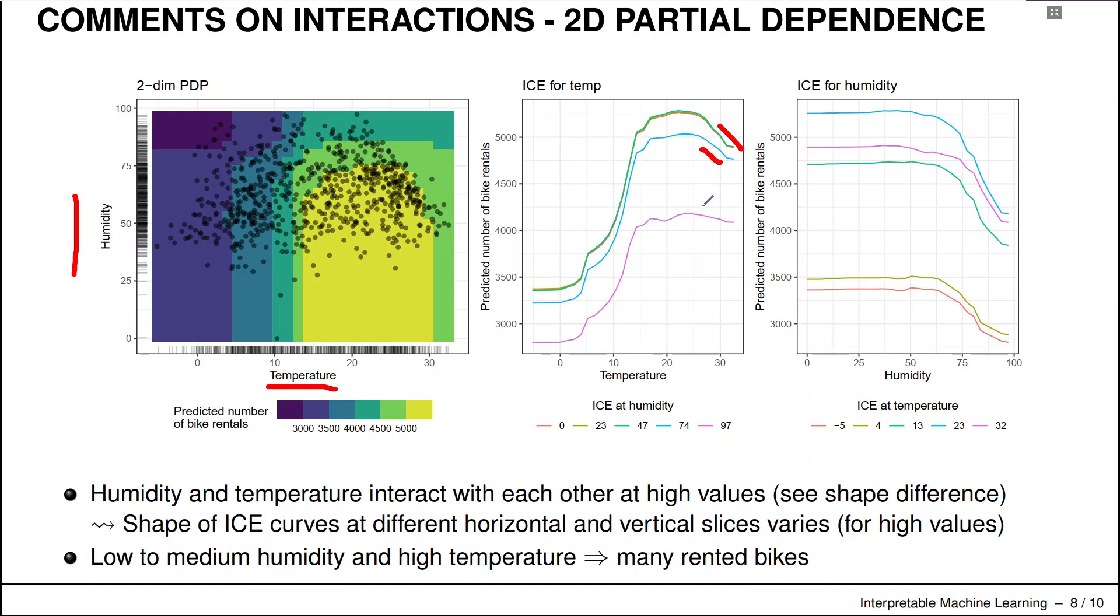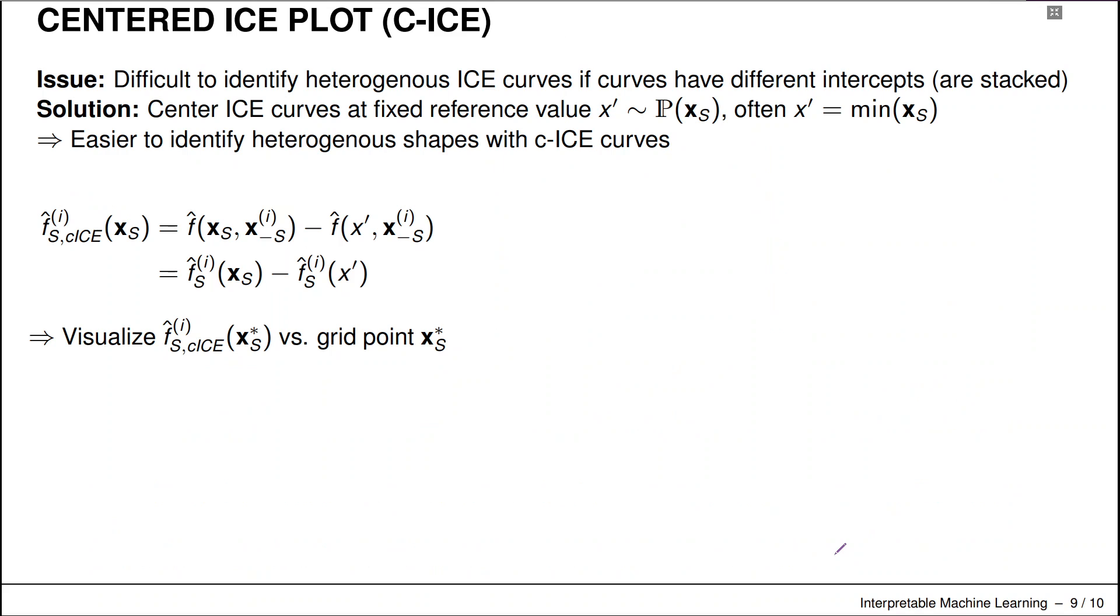You can see that there's a slightly different shape going on for high values, especially for high values of humidity if we look at the ICE plots with respect to temperature. But in general, we could conclude from this. So for low to medium humidity and high temperature, there are many bikes rented from our shops.